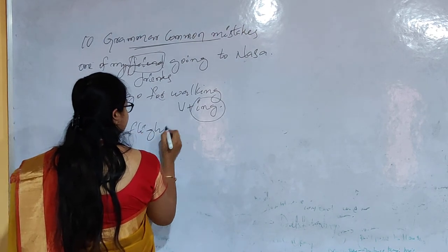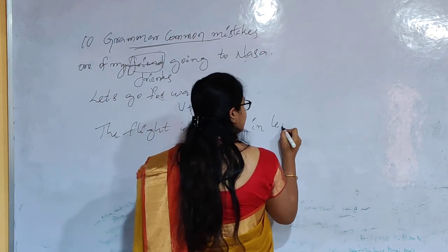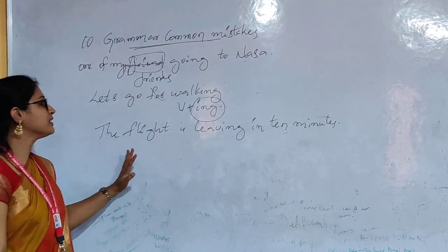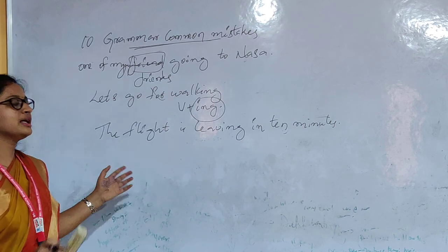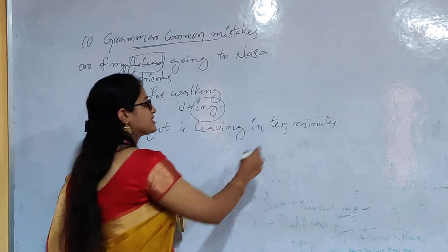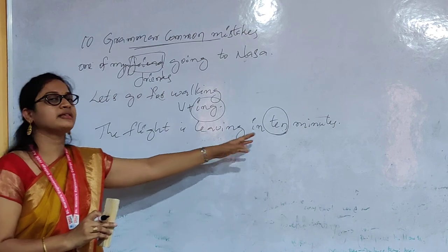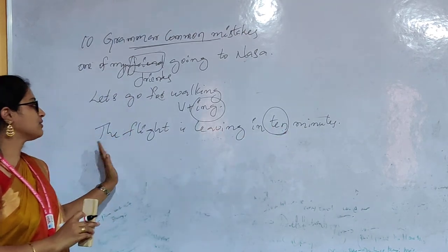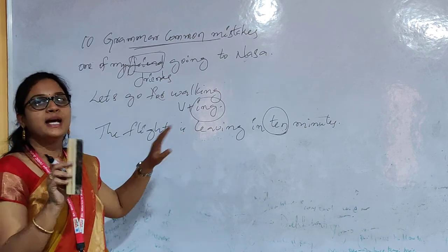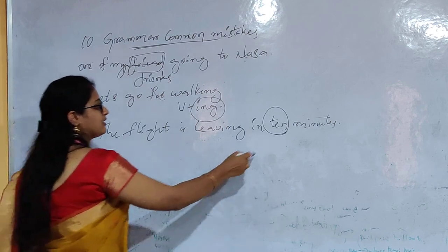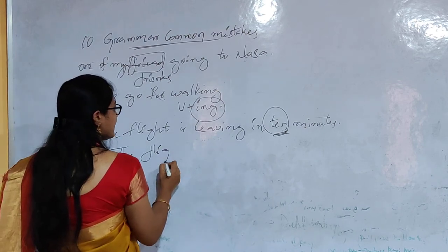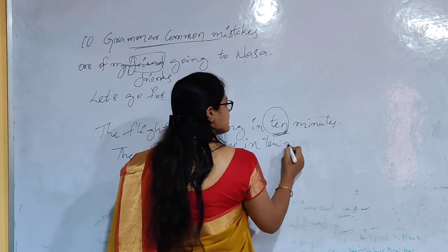Seventh mistake: 'The flight is leaving in 10 minutes.' The tense is wrong here. Whenever you are talking about a particular timetable or schedule, you should always use the simple present tense. We are talking about a fixed schedule — 10 minutes. So you should not use the present continuous tense. The correct sentence is: 'The flight leaves in 10 minutes.' Always use simple present tense when mentioning any timetable or schedule.